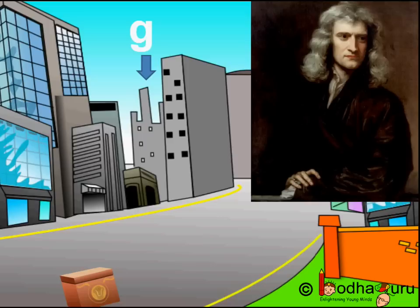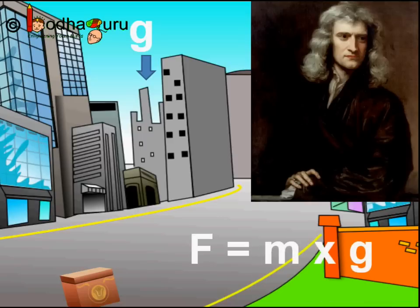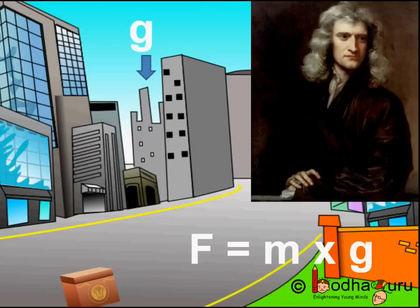We call it acceleration due to gravity, and we denote this acceleration by g. According to Newton's second law of motion, the force applied on an object is equal to the product of its mass and the produced acceleration — that is, F is equal to mass into acceleration. Say the mass of the falling box is m, so the force acting on it, which is the gravitational pull, F is equal to m multiplied by g.